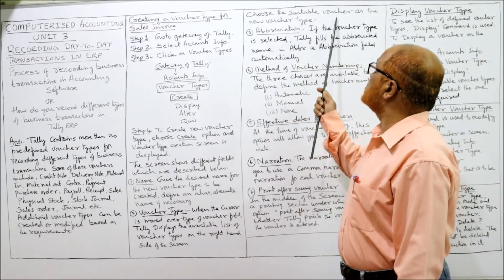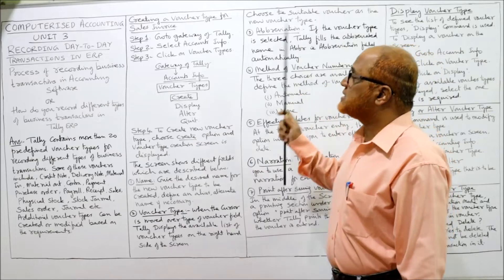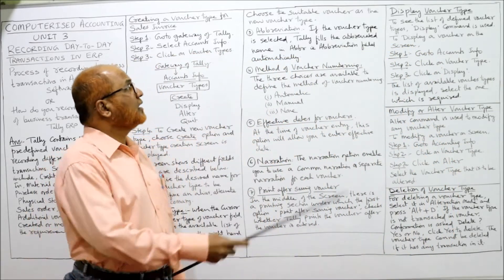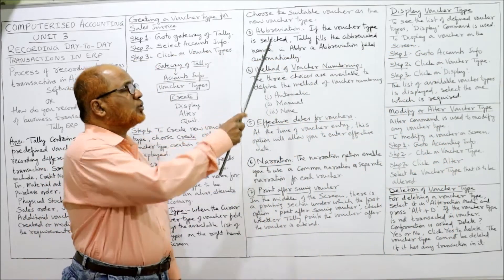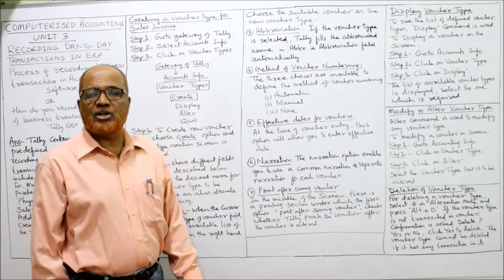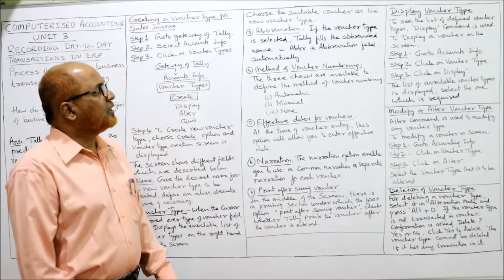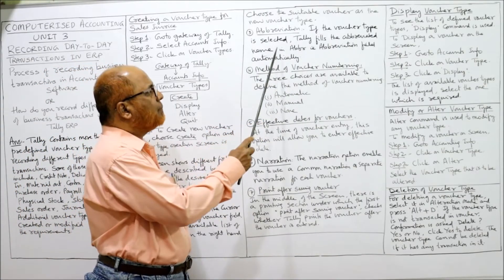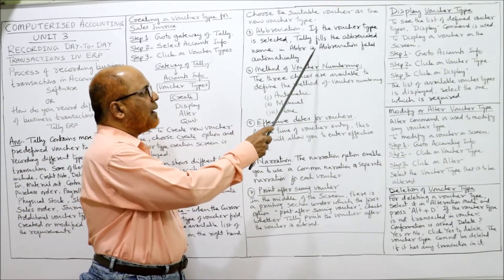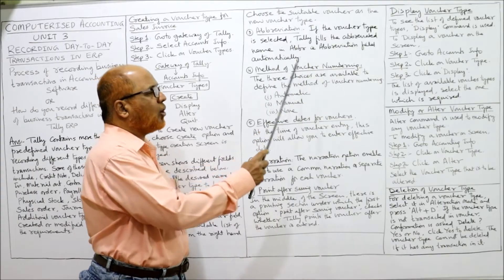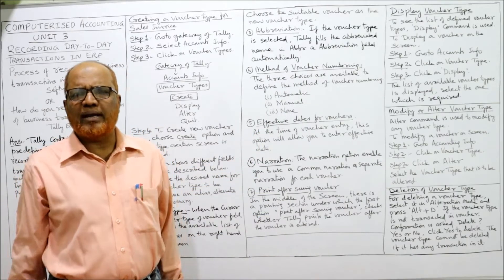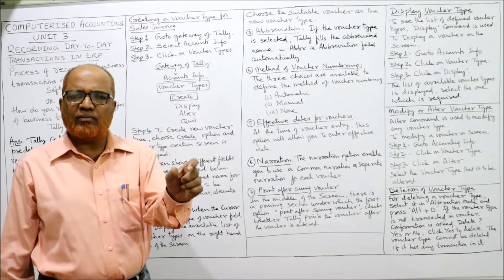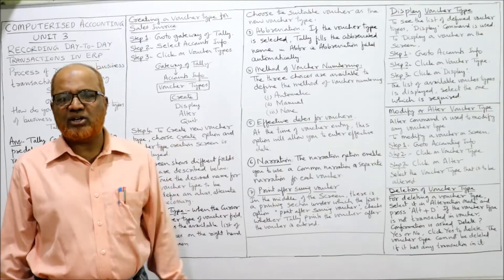Choose the suitable voucher as the new voucher type and select it. The fourth field is Abbreviation. If a voucher type is selected, Tally fills the abbreviated name in the Abbreviation field automatically — no need to do anything, it is filled automatically.